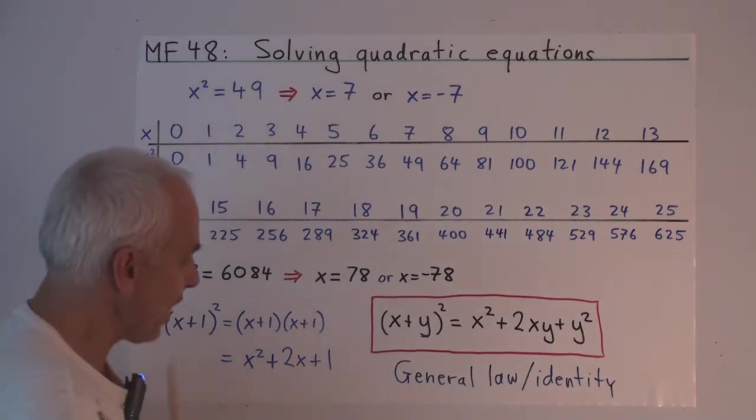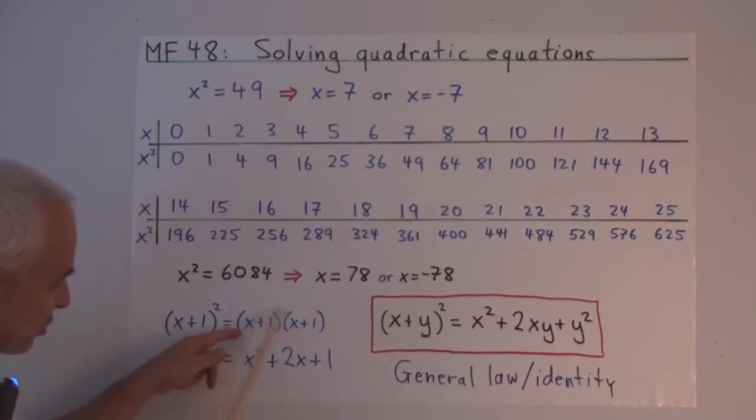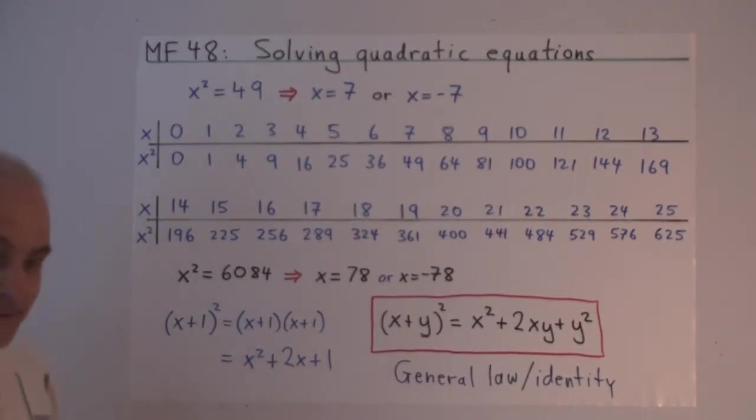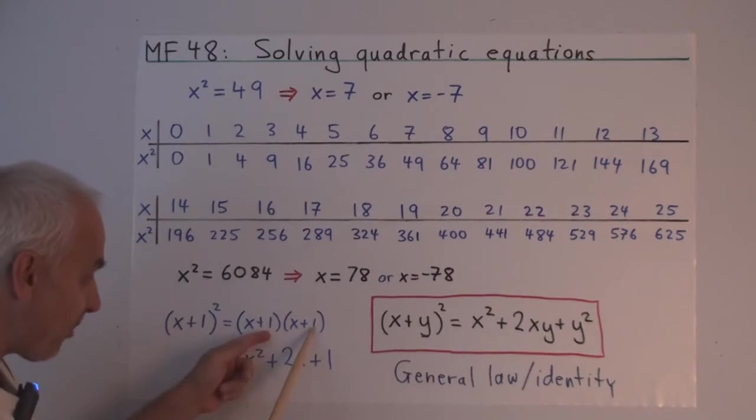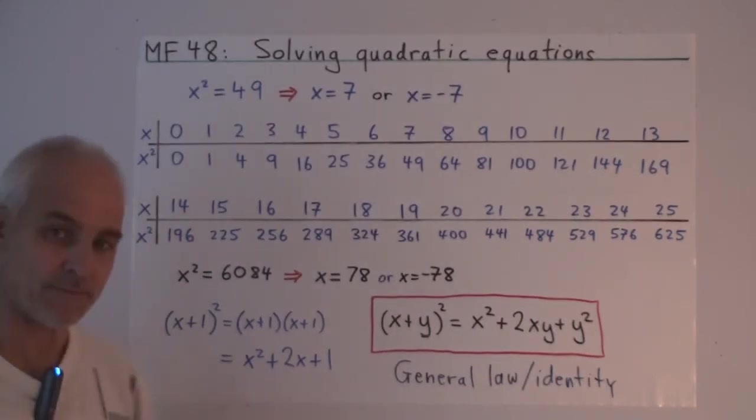So we're going to try to think about this kind of quadratic equation and some more general variants of it. But before we do, let's have a look at some general laws which are very pertinent to understanding quadratic equations. The first is what happens when we square x plus 1. x plus 1 squared, so that's x plus 1 times x plus 1. Now if we use the distributive law here, there's an x squared, and there's an x here and another x here for a total of 2x, and then there's also a plus 1. So a very important equation or identity that x plus 1 squared is x squared plus 2x plus 1.